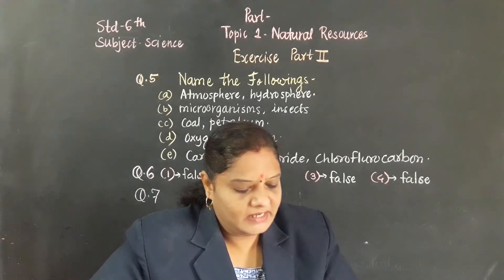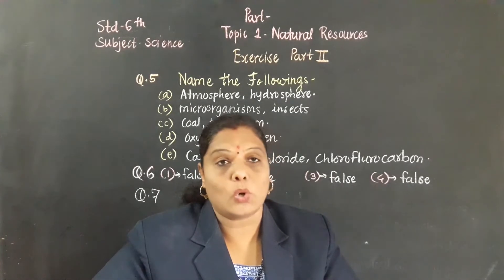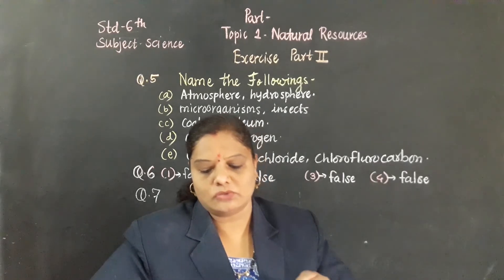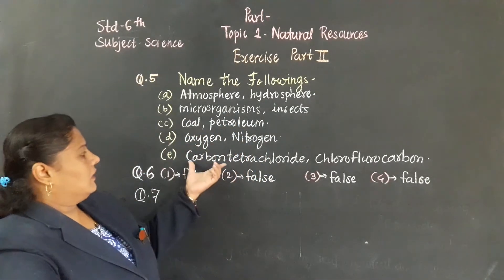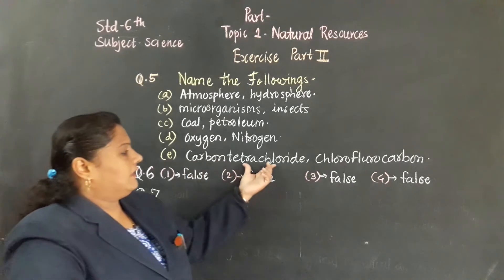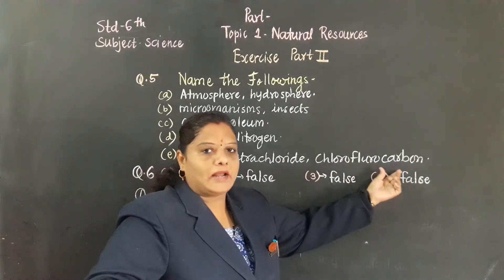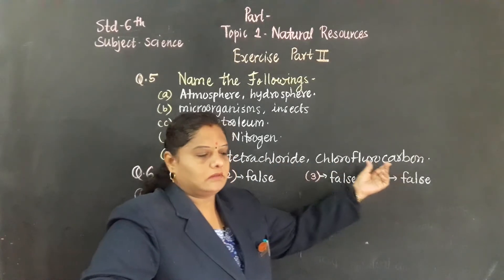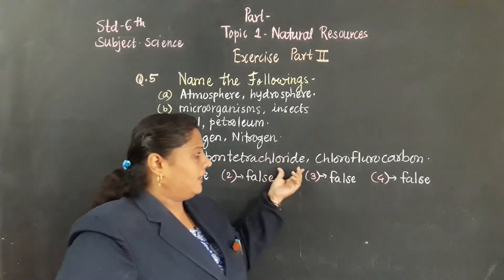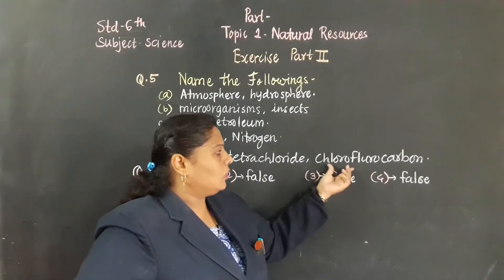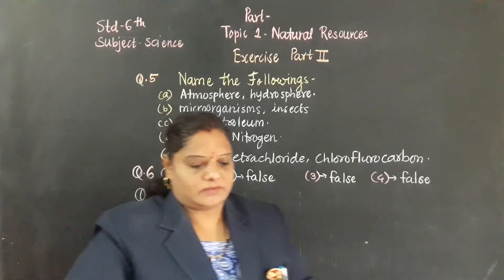E question: gases that are harmful to the ozone layer. The answer is carbon tetrachloride and chlorofluorocarbon. I repeat again — carbon tetrachloride and chlorofluorocarbon. That is the answer of this question.